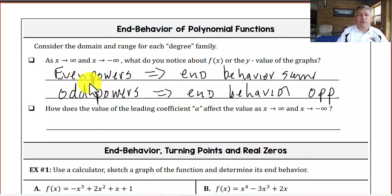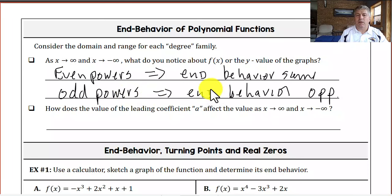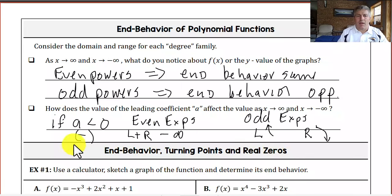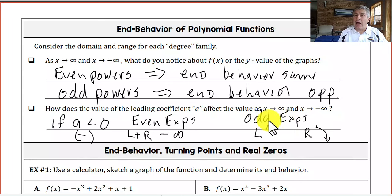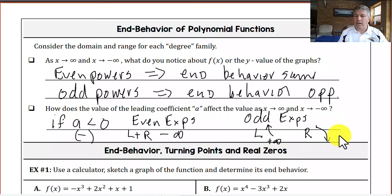Quick summary: if we have even powers on the leading exponent, the end behavior is the same in both directions. If we have odd powers, the end behavior goes in opposite directions. If the leading coefficient a is negative and we have an even exponent, both left- and right-hand behavior go to negative infinity. If we have an odd exponent with a negative coefficient, left-hand behavior goes to positive infinity and right-hand behavior goes to negative infinity.